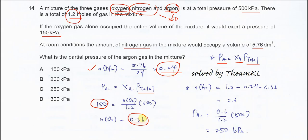Both nitrogen and oxygen moles are already obtained. Now we can get the moles of argon. Since the total moles is 1.2, we use 1.2 minus the moles of nitrogen and oxygen. We get 0.6 for argon.